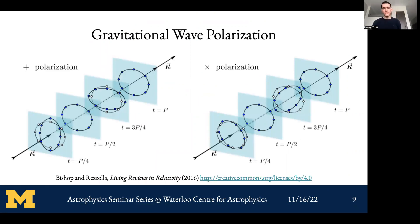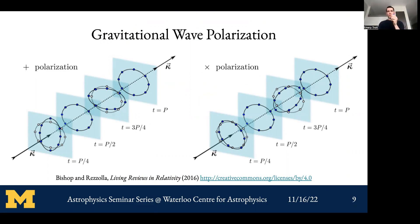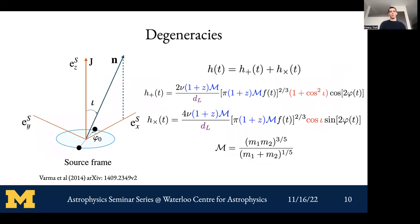The signal is polarized. As it propagates, it distorts space: a plus polarization compresses along one direction and stretches along the orthogonal direction, and a cross polarization is shifted 45 degrees. The detector ultimately measures some superposition of the plus and cross polarizations, with response functions modifying the detected amplitude.